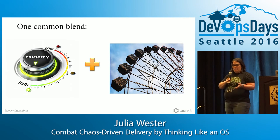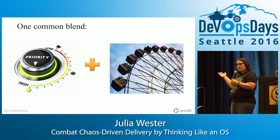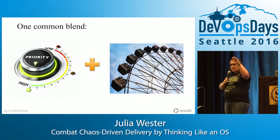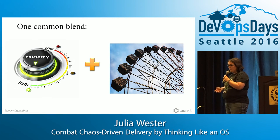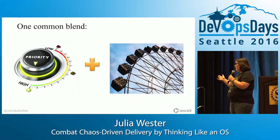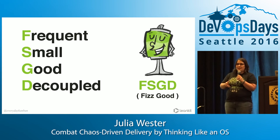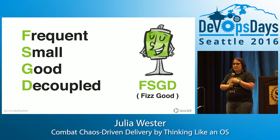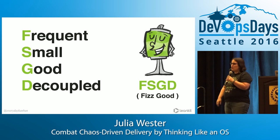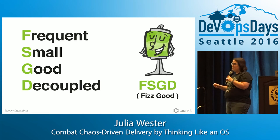One common blend you might see is priority plus round robin — working with our familiar high-priority-down approach, but then doing each one in chunks so that everything's getting some love. But there's a key to doing that right, and it's breaking things down into small but valuable pieces. At LeanKit, we have a concept of 'fizz good.' If we were going to do a round robin, we would try to deliver something small but valuable in each cycle — that's really important to do a round robin properly.